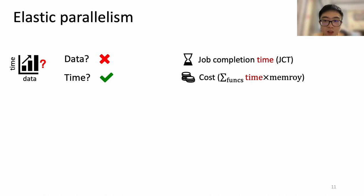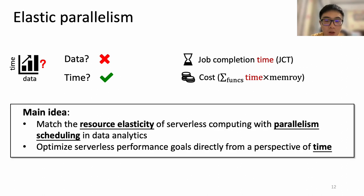In addition to ignoring data dependencies, the data-based method also suffers when execution time is not proportional to the amount of data. Now let's revisit serverless performance goals. We observe that the most important factor for both JCT and cost is the execution time of each function. So in this work, we propose elastic parallelism scheduling to match the resource elasticity of serverless computing with parallelism scheduling in data analytics. The main idea is to optimize serverless performance goals directly from a perspective of time.